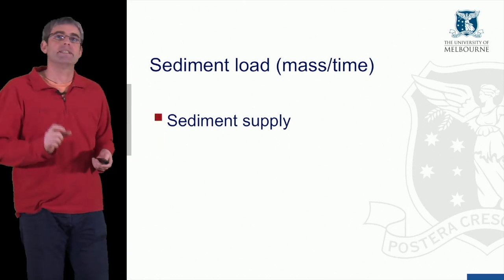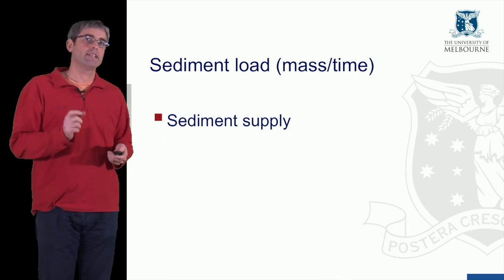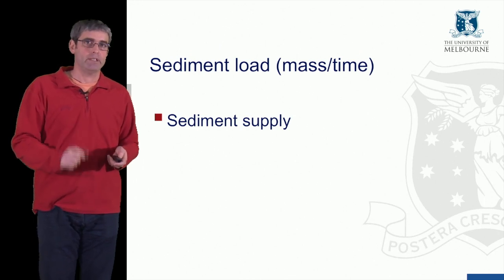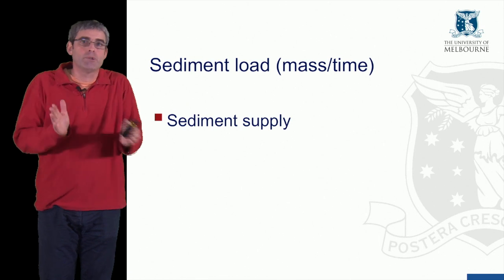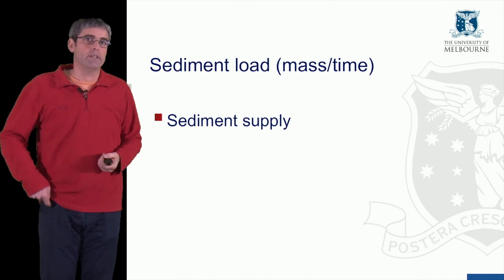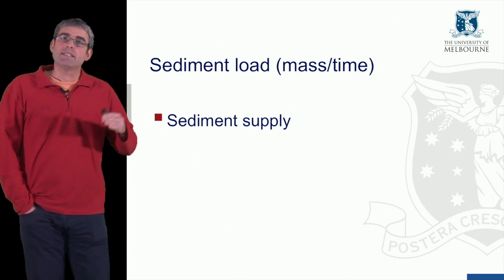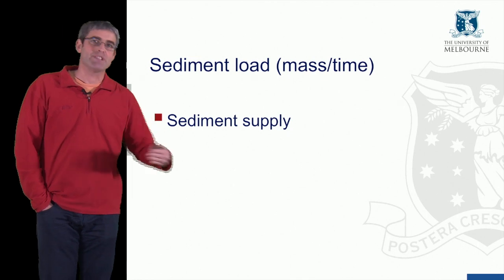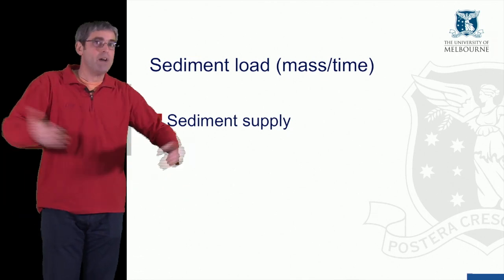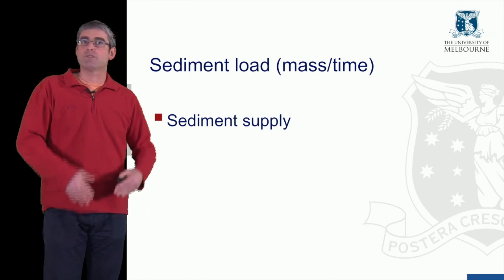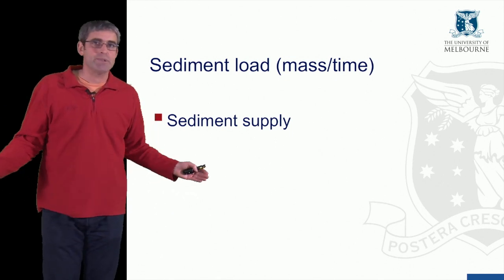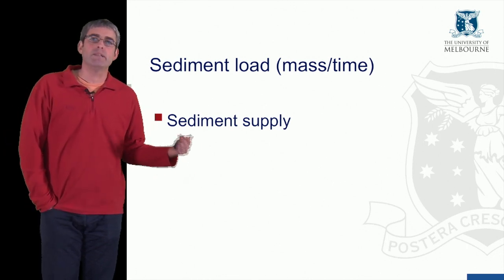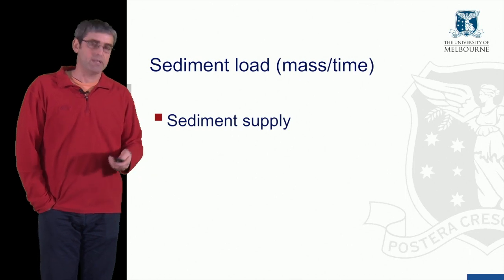There are two different factors that can limit the amount of sediment being transported within a river channel. At any given time, one of these two factors is limiting sediment load. The first is sediment supply. If there's no sediment being supplied to the channel, there's no sediment to transport and the sediment load is zero. It doesn't matter how fast the river's flowing or how strong the shear stress is — if there's no sediment to transport, the sediment load is zero. That is a supply-limited situation where sediment supply controls sediment load.